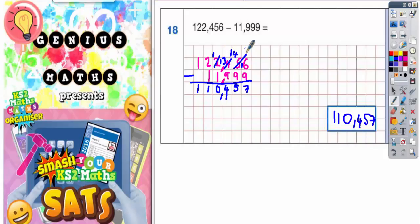What you could have done is actually rounded this up to 12,000 and said well if I'm on 122,000 if I take off 12,000 that will be 110,456. But that 12,000 is one too many.